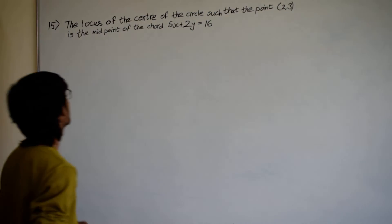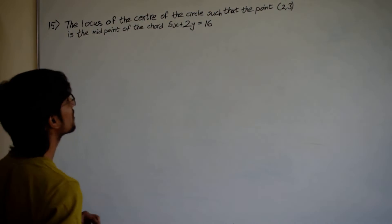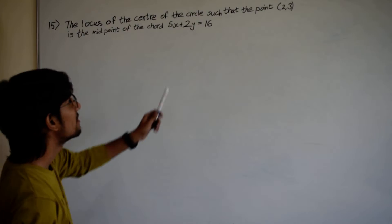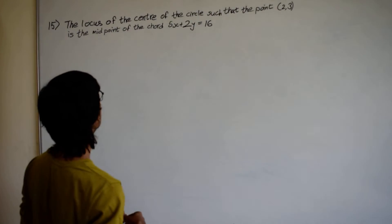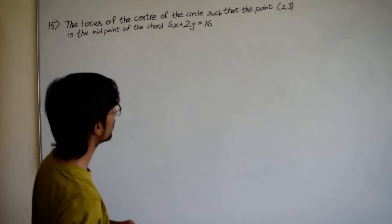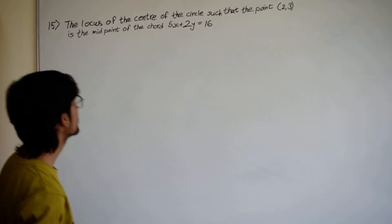The fifth question is: find the locus of the center of the circle such that the point (2, 3) is the midpoint of the chord 5x plus 2y equals 16.